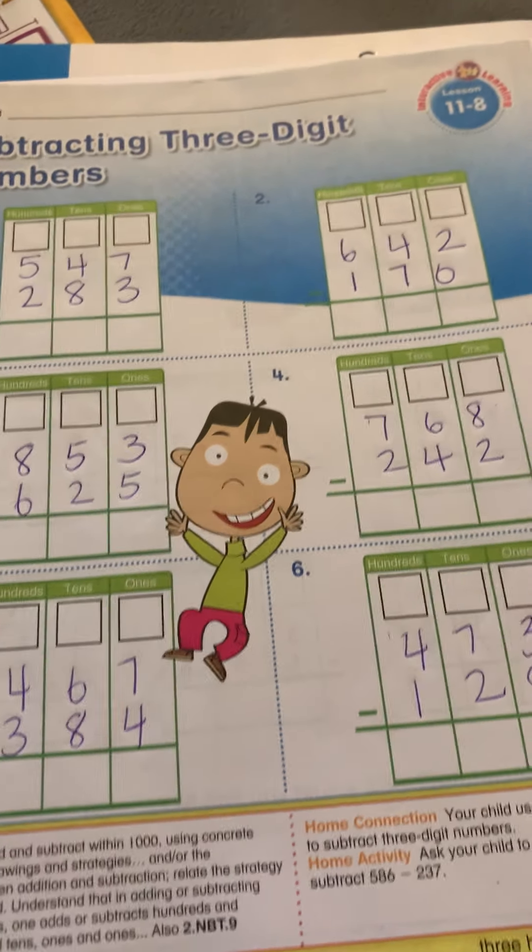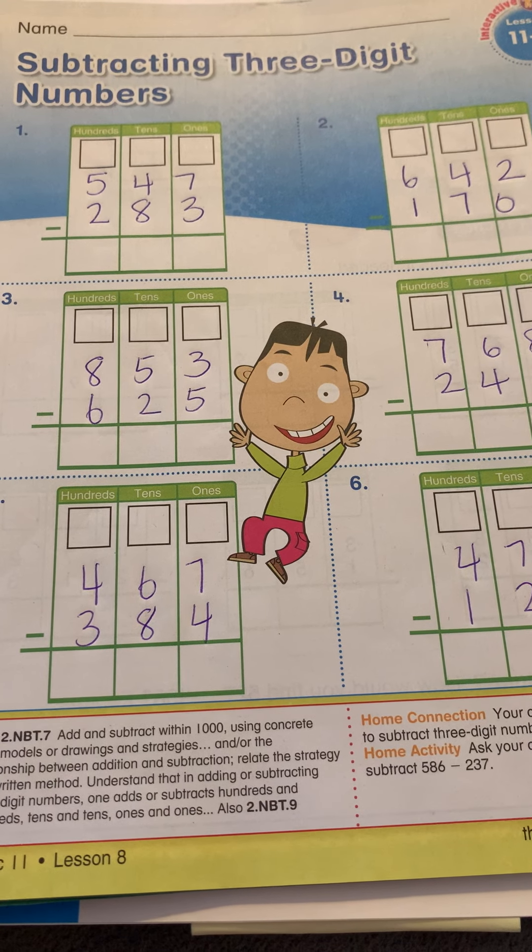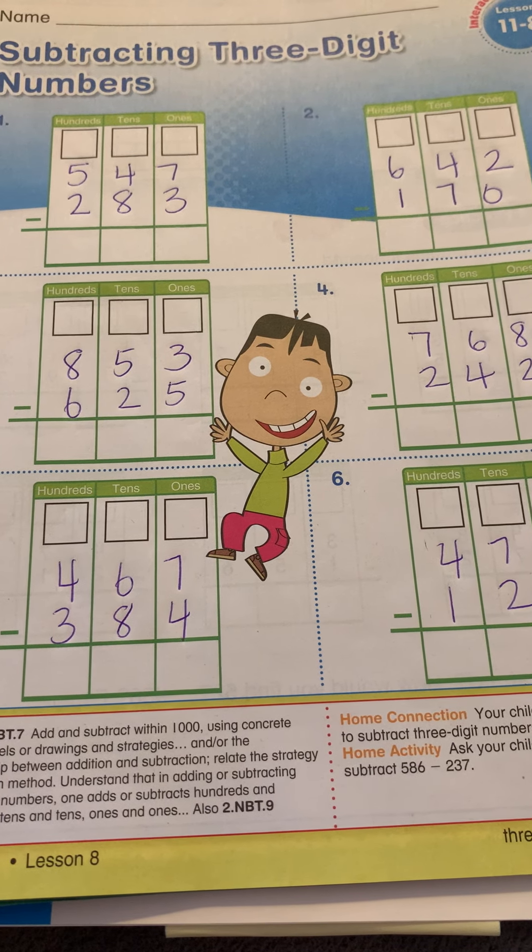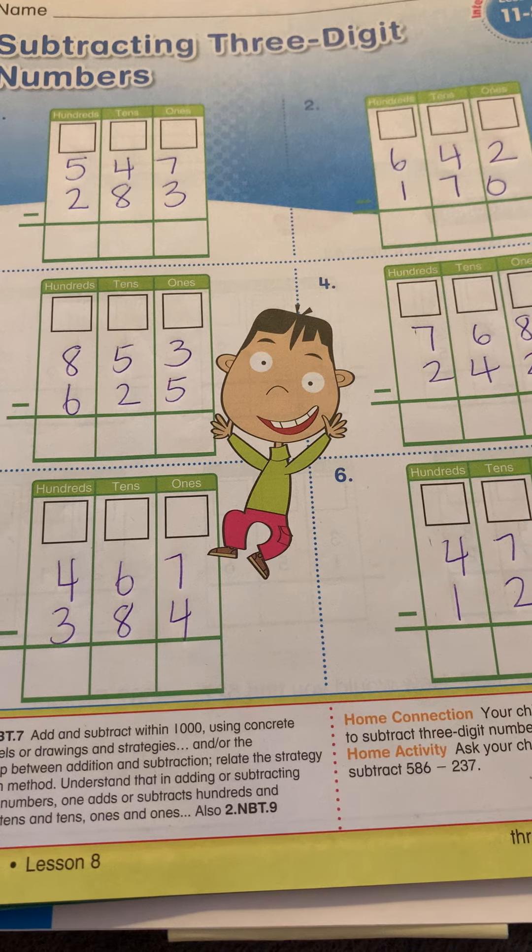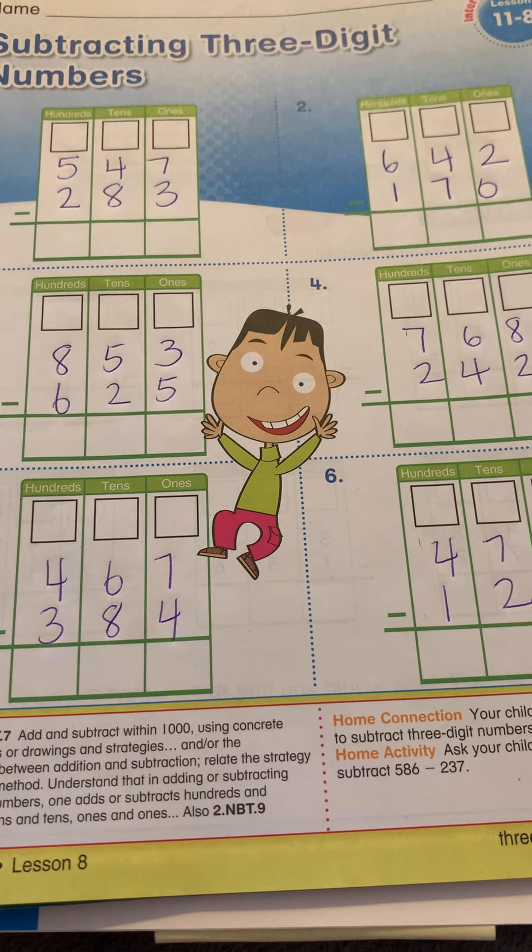All right, hi guys. Today we are on 11-8. It's the exact same thing that we did yesterday, subtracting three-digit numbers. So we're just going to do lots of practice on subtracting. We need to make sure that we are regrouping if the number on the bottom is bigger.